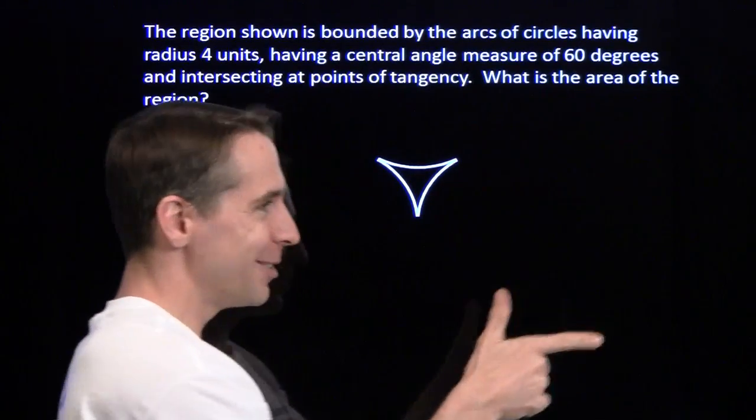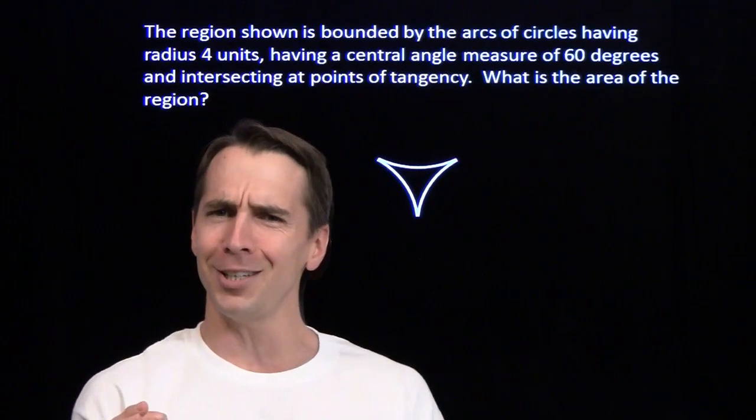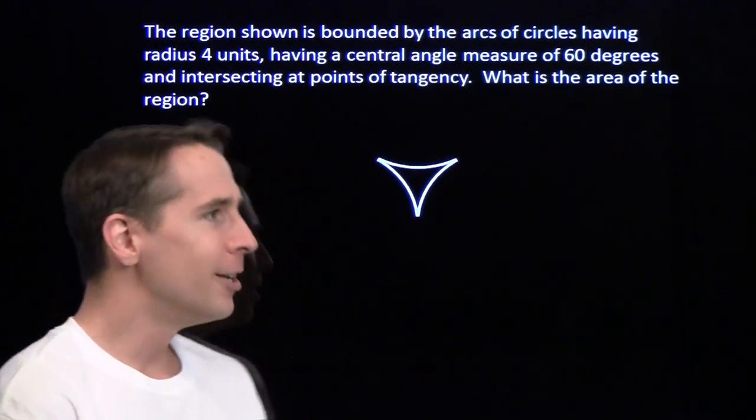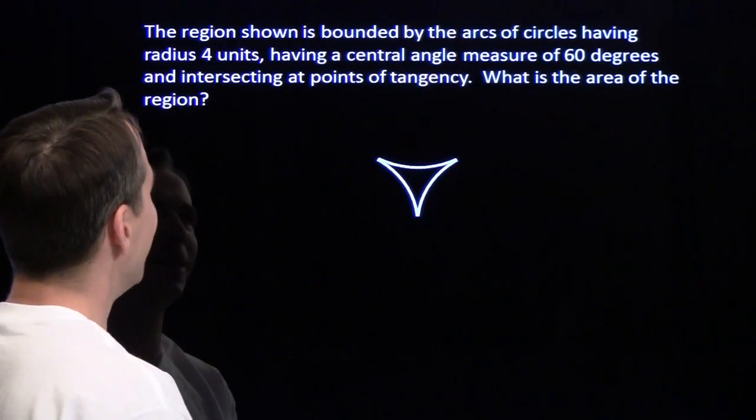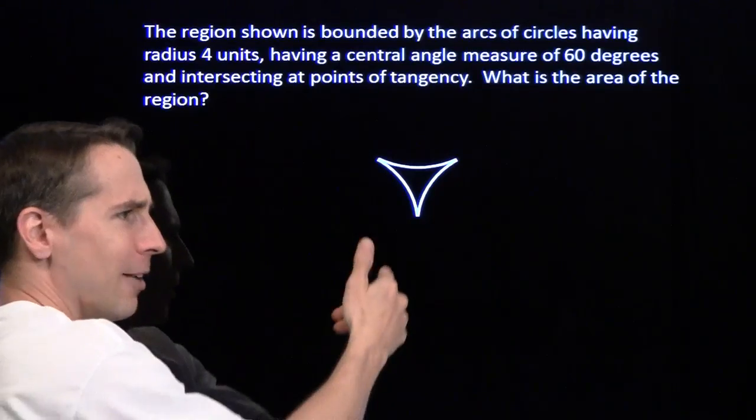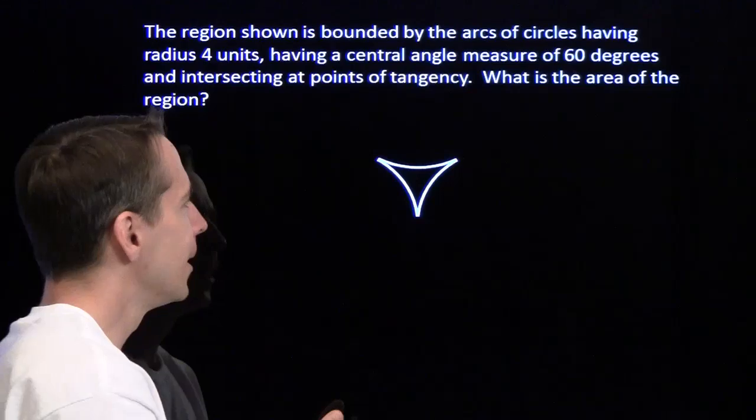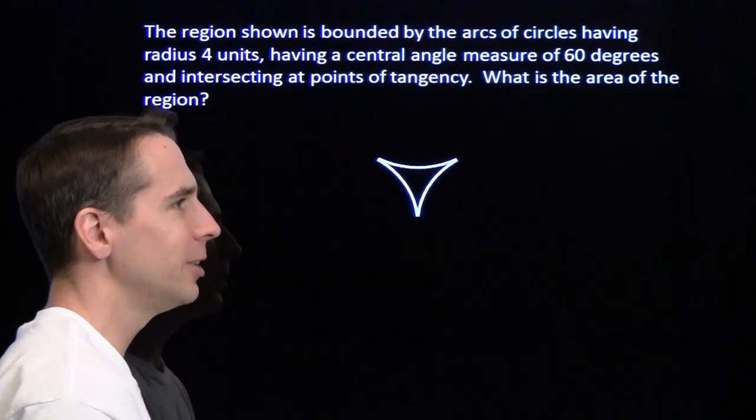How's it going, man? Good to see you. Now you've seen him in action before, knocking down these geometry problems because he can see things that aren't there. So Harvey, what do you see here? We've got these three arcs here, they're arcs of circles that have radius four units, and the central angle measures sixty degrees. How do we tackle this problem? What do you see?